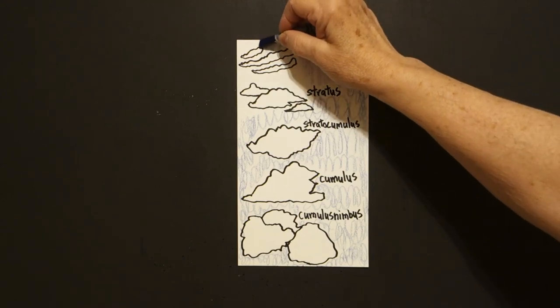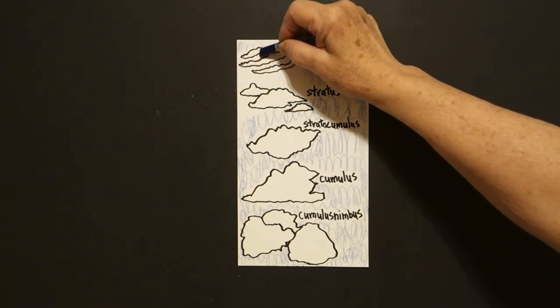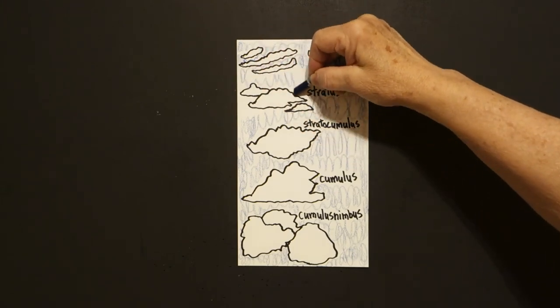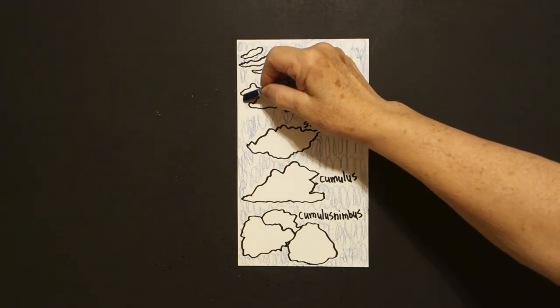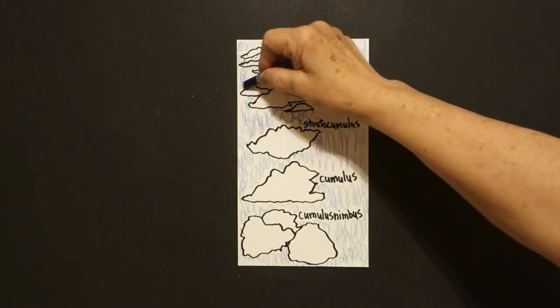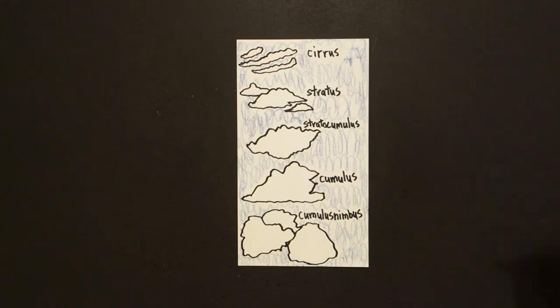Now that you have this, you can go outside, maybe during a break, look up in the sky, see if you can figure out what kind of clouds you are looking at. All right, let's see what this looks like all colored in.